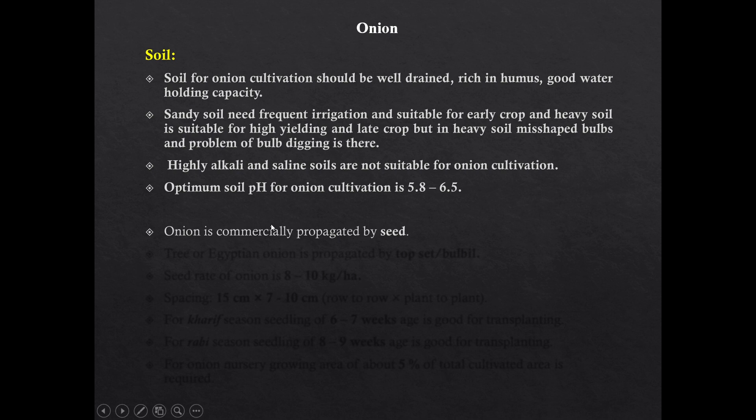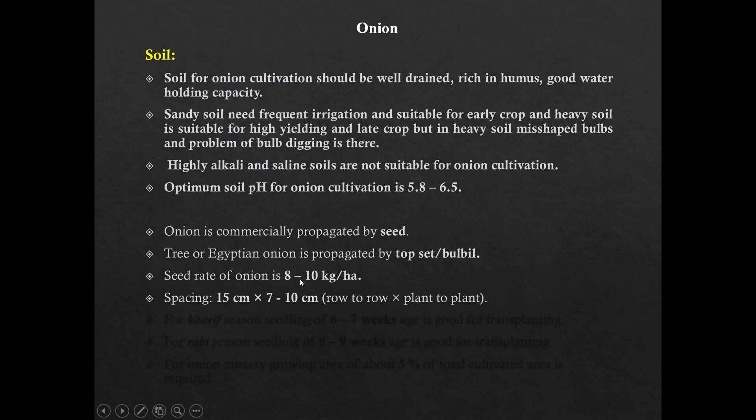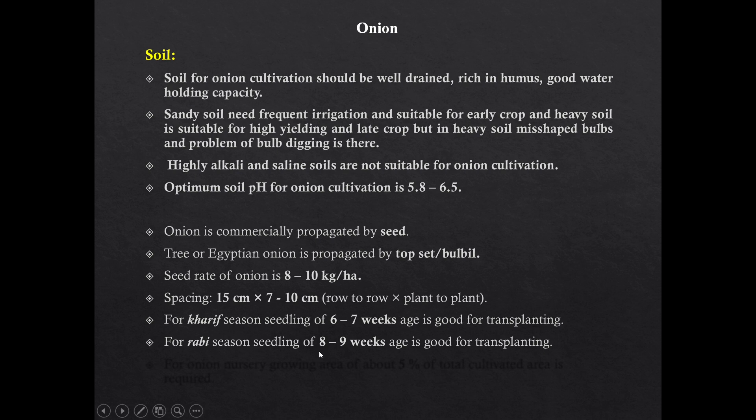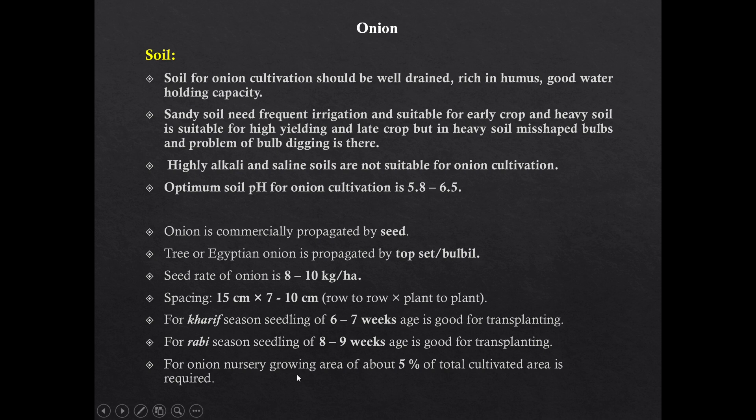Onion is commercially propagated by seed. Tree onion and Egyptian onion are propagated by top bulbs. Seed rate in onion is 8 to 10 kg per hectare. Spacing is 15 by 7 to 10 cm. For kharif season, seedlings of 6 to 7 weeks age are good for transplanting. For rabi season, seedlings of 8 to 9 weeks age are good for transplanting. Nursery area should be 5% of the total cultivated area.